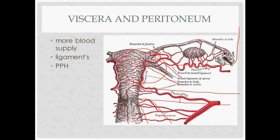The final ligament is the utero-ovarian, named for what it connects. Clinically, in postpartum hemorrhage — if pitocin and methergine have failed and you need to surgically cut off blood supply — you first want to ligate the uterine artery. If that doesn't work, you can ligate the anterior division of the internal iliac. You cannot ligate the common iliac, because that would cut off blood supply to the entire leg. If none of that works, you would proceed to hysterectomy.